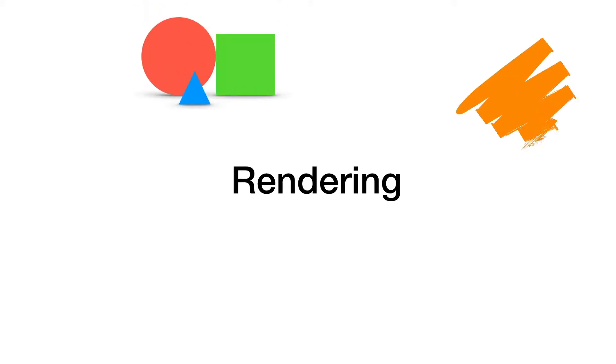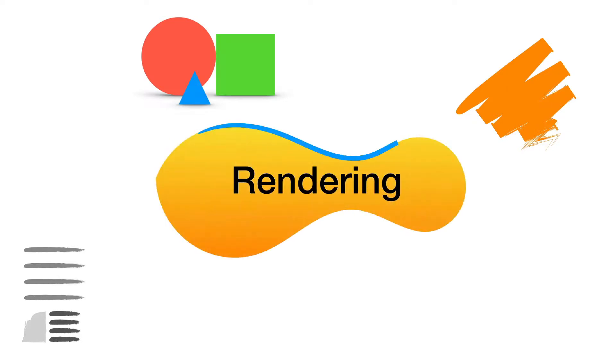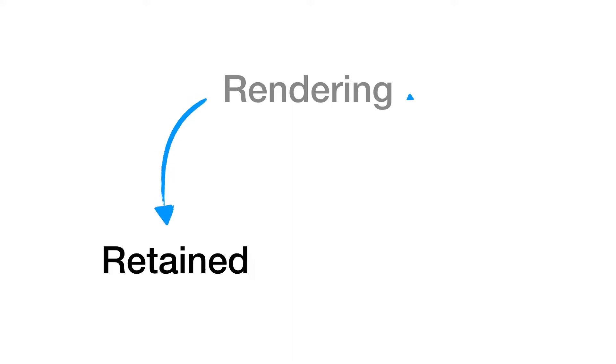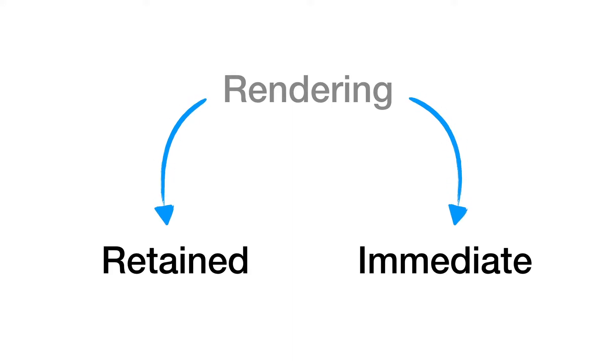2D graphics could include drawing lines and strokes, filling shapes, and even typography where you can have text on the screen. So all of this comes under the purview of rendering. One of the most important responsibilities of a UI toolkit is to give you a way to do this rendering, and it turns out there are only two possible ways: one is called Retained mode and the other is Immediate mode.